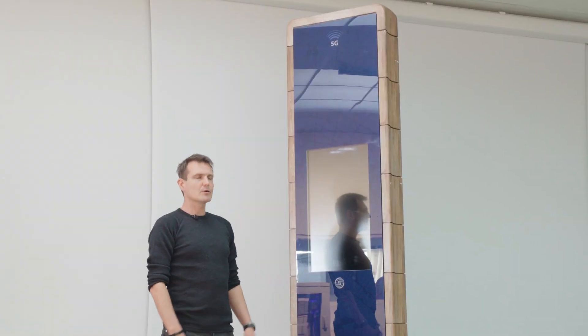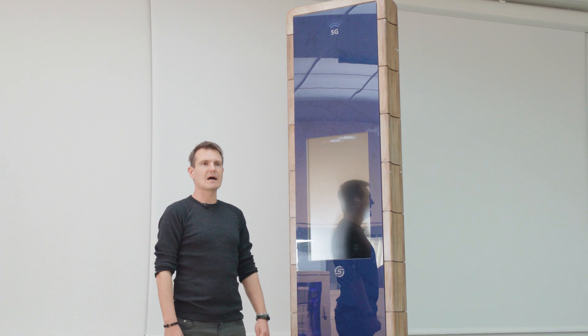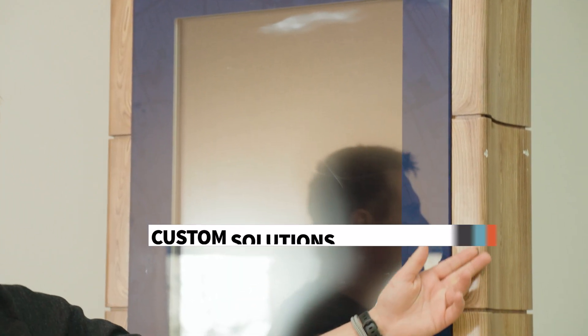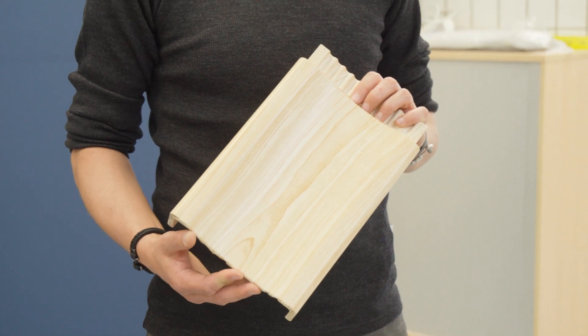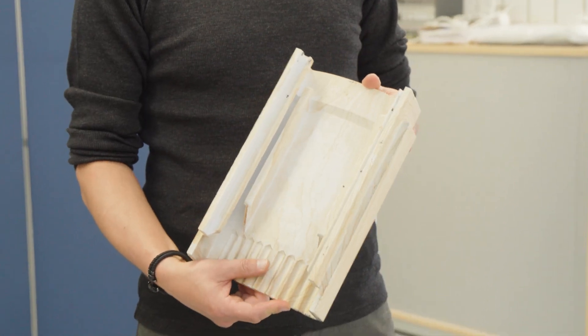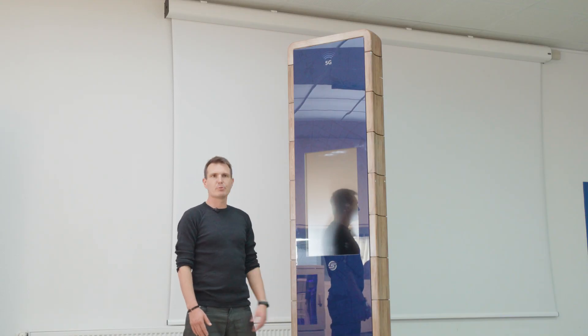This is a smart tower where you can put the 5G antenna in and we 3D printed the side panels because there we are free in shape, in design. You can put it into public spaces or bus stops or as information points.